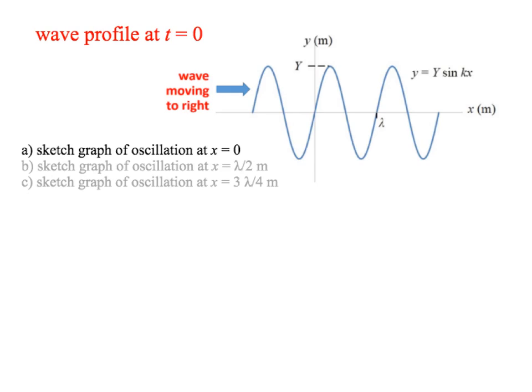In part A, we need to sketch the graph of the oscillation of the wave shown for the point on the wave at which x equals 0. In other words, this point here. So, at x equals 0, we want the graph of the oscillation. So that's displacement versus time.